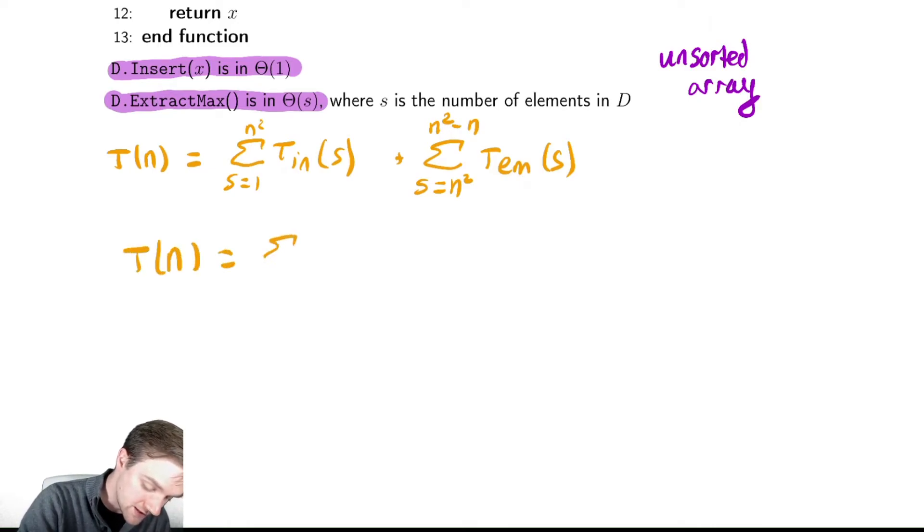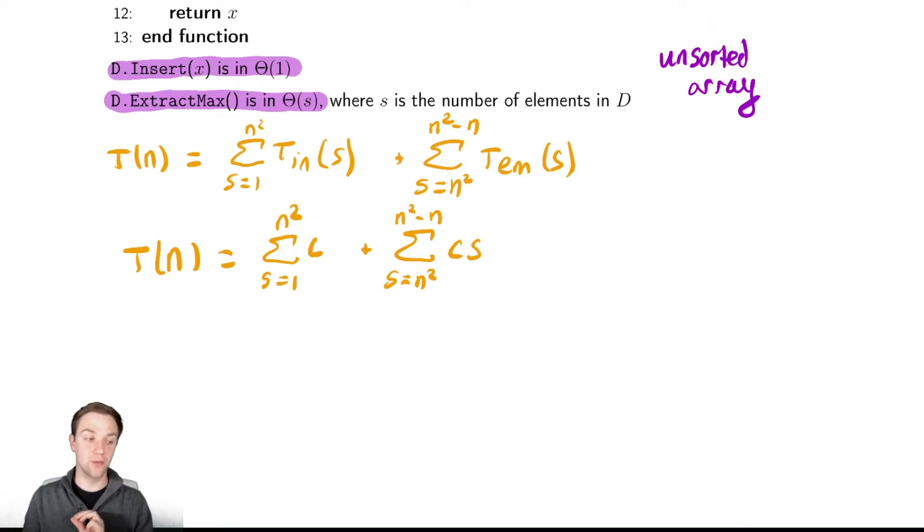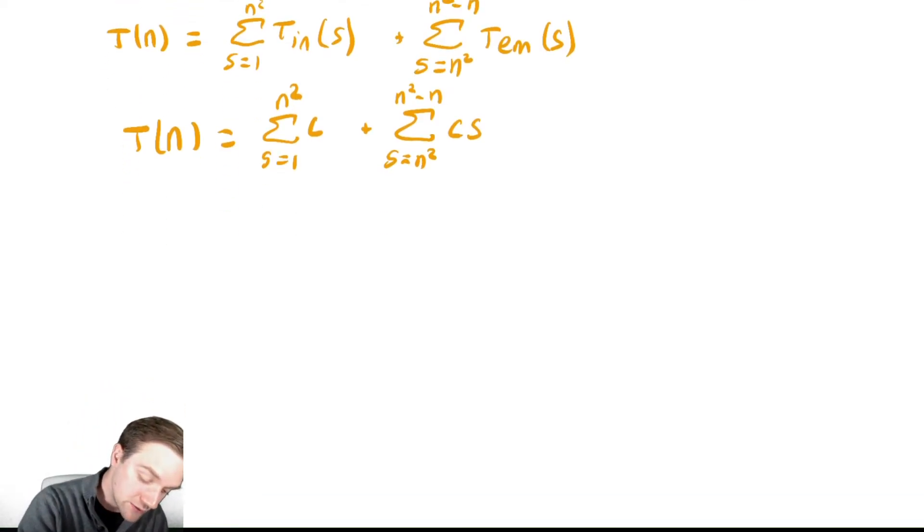So this is equal to the sum from s equals 1 to n squared of a constant plus the sum from s equals n squared down to n squared minus n of the time it takes to extract the maximum, which is c times s. And now we need to be a little bit careful for this last summation. Because my bounds look similar, they both have n squareds in it, I need to be slightly cautious about how I analyze that summation.